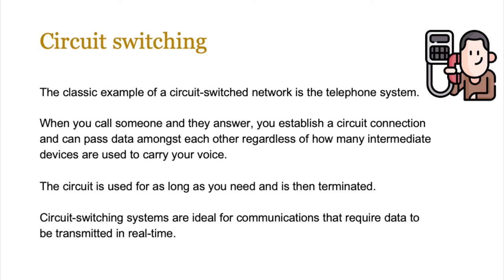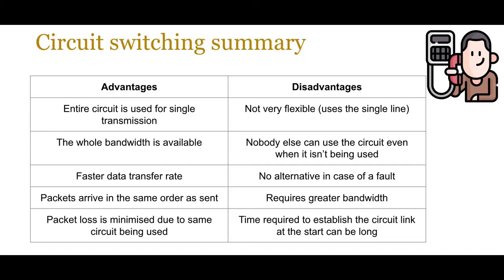The classic example of a circuit switched network is the PSTN, the telephone system. When you call someone and they answer, you establish a circuit connection and can pass data between both devices, and that path is reserved for your communication only. The circuit is used for as long as you need it and then terminated. Circuit switching systems are ideal for communications that require data to be transmitted in real time, such as live video broadcasts and live audio broadcasts.